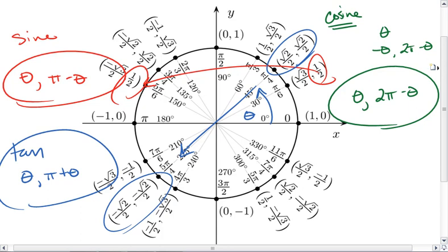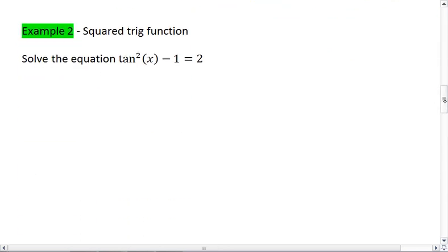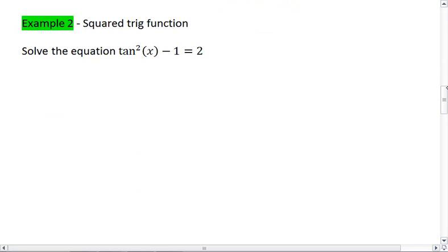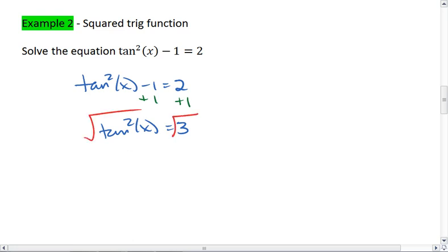Okay, back to our next problem. And this will be applicable in this problem as well. So we're going to solve the equation tan squared x minus 1 equals 2. First things first, we want to get tan squared x alone. So we're going to add 1 to both sides. We then get tan squared x equals 3. Now to get rid of that square, we're going to square root both sides.